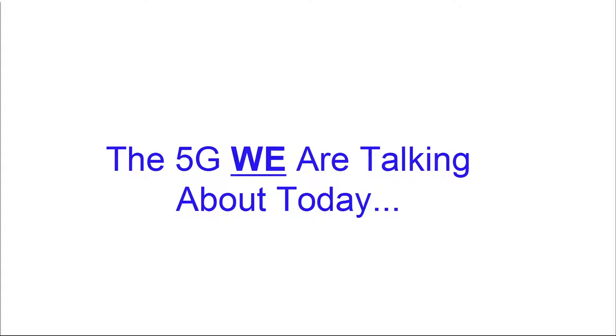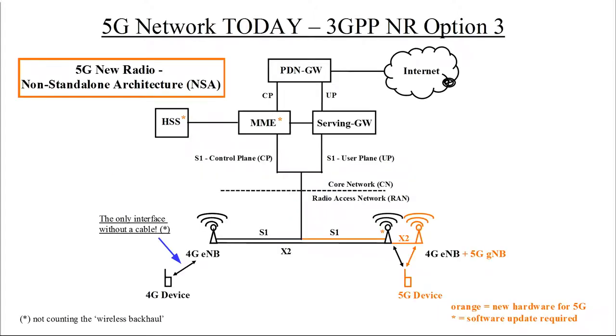The 5G we are talking about today will be the following. I brought an overview about what we will present today — the 5G that is already existing today. This is the network as it is at the moment. The black parts are the LTE networks which already exist, and the orange parts are the new parts which will be added for 5G. The important thing about the 5G which already exists is that it always coexists with 4G — it cannot be standalone. That's why it's also called 5G New Radio Non-Standalone Architecture.